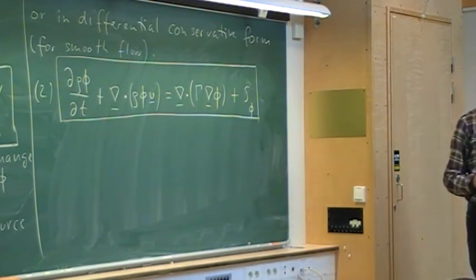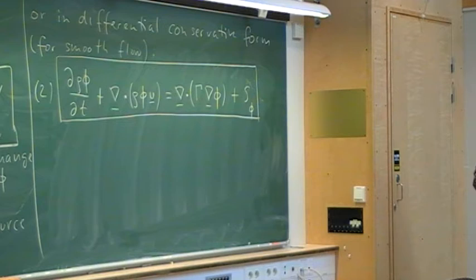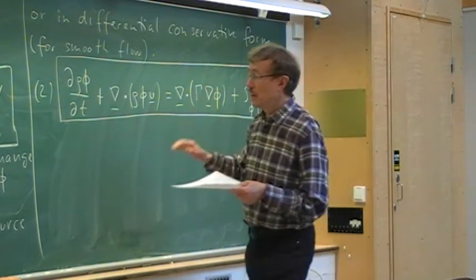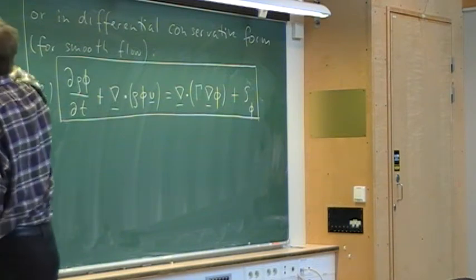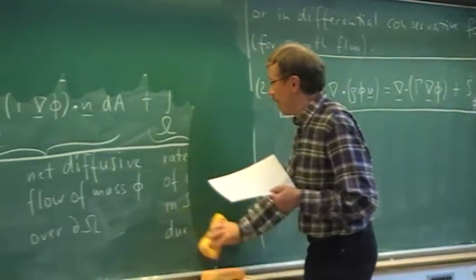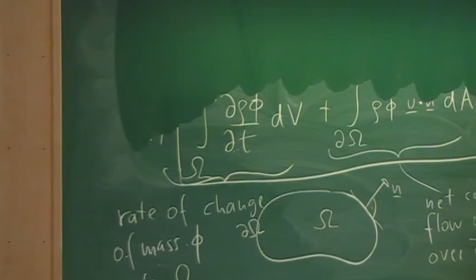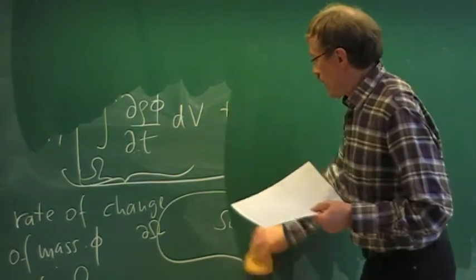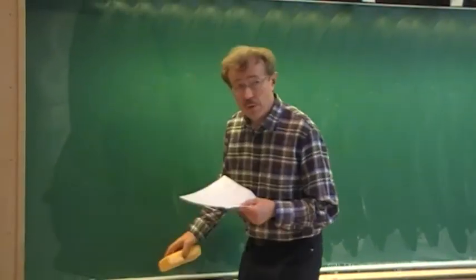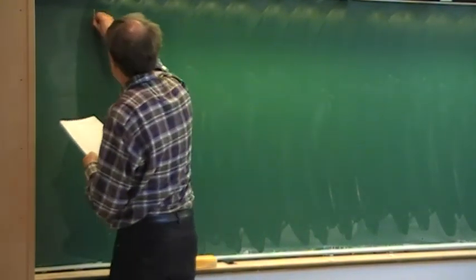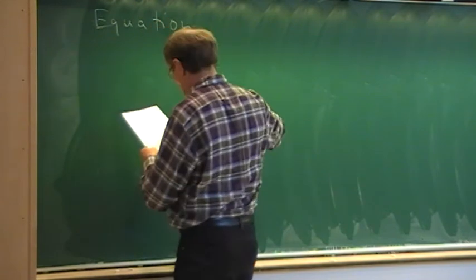We can now look at examples. All the equations we have considered so far are conservation laws. Let's make a table with some examples, listing the equation, the physical quantity, the diffusion coefficient, and the source term.